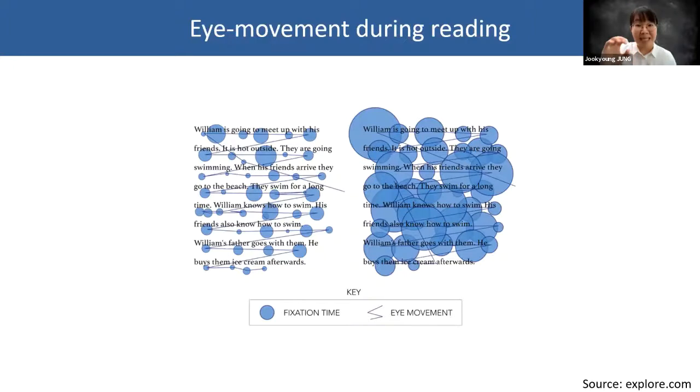If the circle is big, it means you stared at that part for long. Next, the lines show how your eyes moved across the text. Sometimes from left to right, which we call forward saccade. Other times your eyes may move from right to left, which we call regression. It may happen when you want to reread some previous part and when you want to accurately understand that text part.